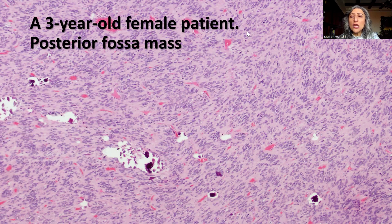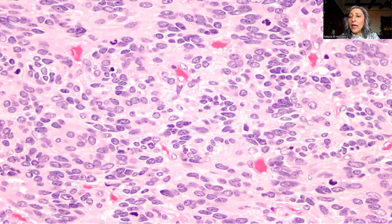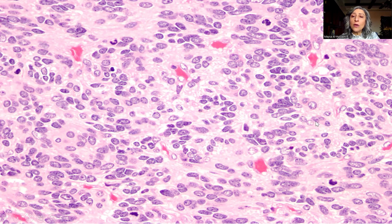The low-power magnification might give an impression of ependymoma. On slightly higher power magnification, what first catches the attention is the abundance of mitotic activity seen throughout the tumor. This is a mitotically active tumor.